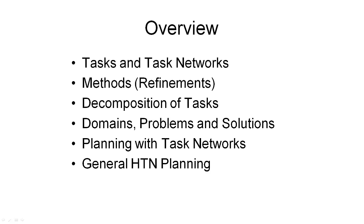You should now understand what tasks and task networks are. For this approach to planning, we really need three new things: tasks, task networks, and methods. We again try to set up our planning problem as a search problem. Methods describe ways in which we can transform task networks. They are plan refinements and therefore correspond to state transitions in our search space.